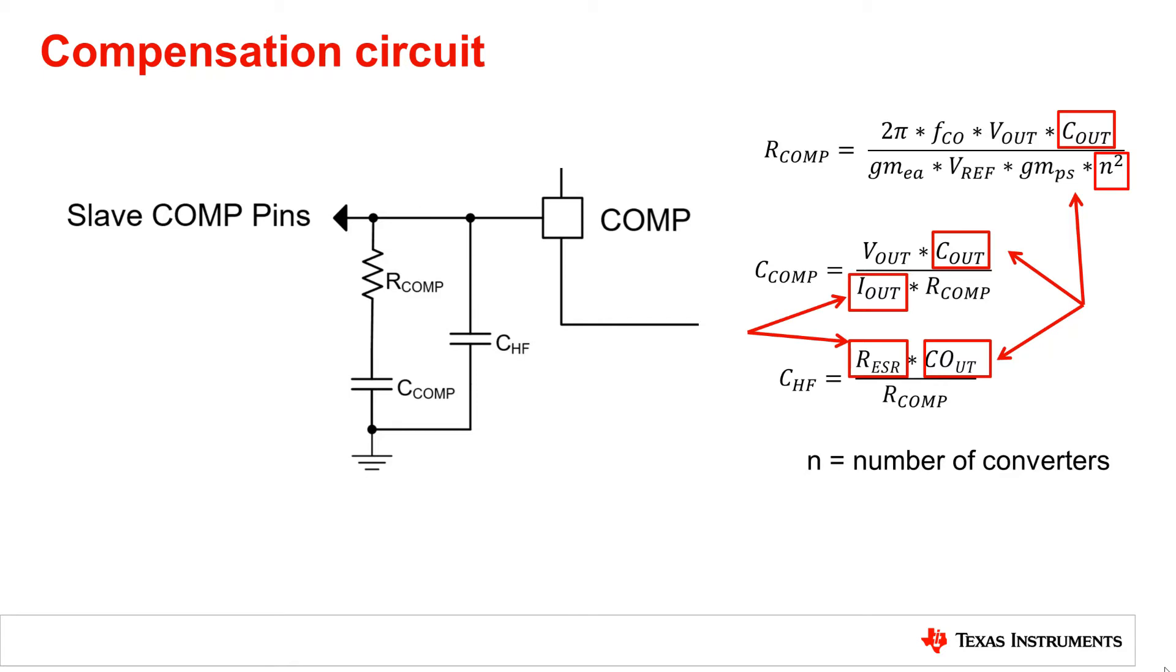For example, if one converter had 1 mF of output capacitance and there were 4 converters, it would be important to use 4 mF as the total output capacitance. Same as with Iout. If each converter is expected to supply 18 amps and there are 4 converters, then the Iout in the equation would be 72 amps.